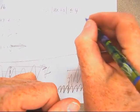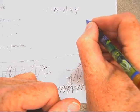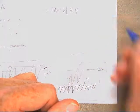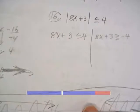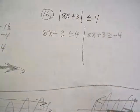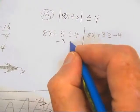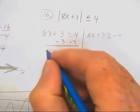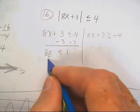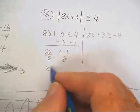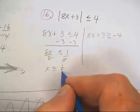8x plus 3 is greater than or equal to negative 4. Okay, so it looks like this. Let's subtract 3. 8x is less than or equal to 1. Divide by 8. x is less than or equal to one eighth.